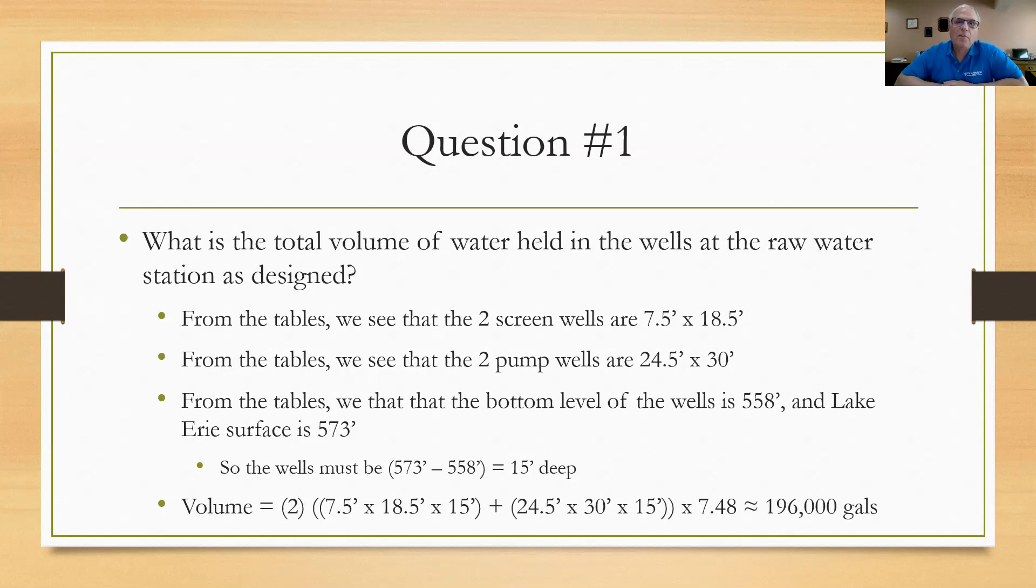So when we do the problem, we've got the volume of two clear wells so I put a two there, and I'm adding together the calculation of both of the wells. The first one was seven and a half by 18 and a half by 15 and the pump wells were 24 and a half by 30 by 15. Going to multiply those by two and convert them to gallons by multiplying by 7.48 and I get approximately 196,000 gallons. Hope you did well on that. And as I always remind you, if you want to work through these problems go ahead and pause the video at each time I offer you a question and you can try to work them out on your own.